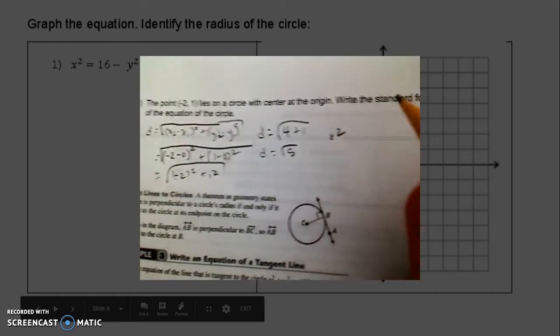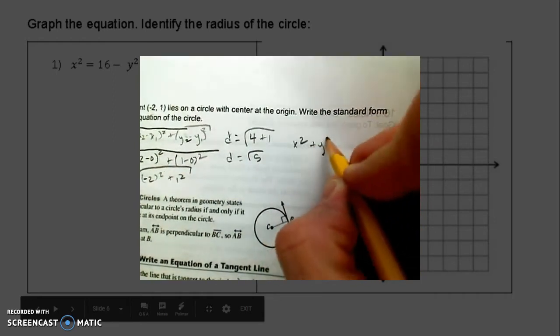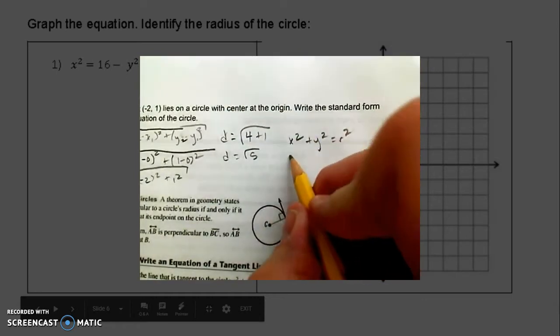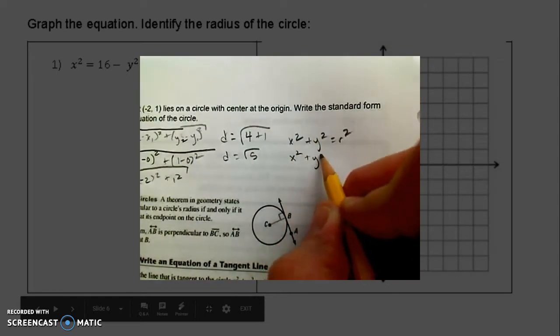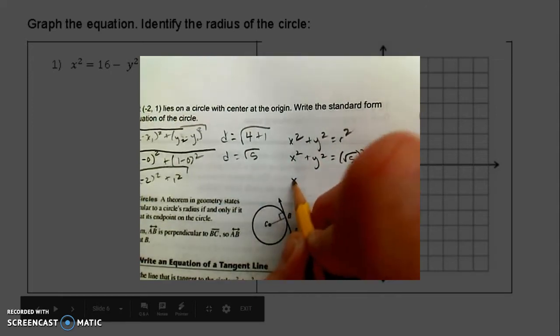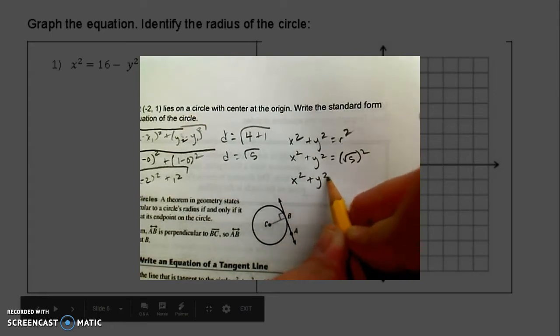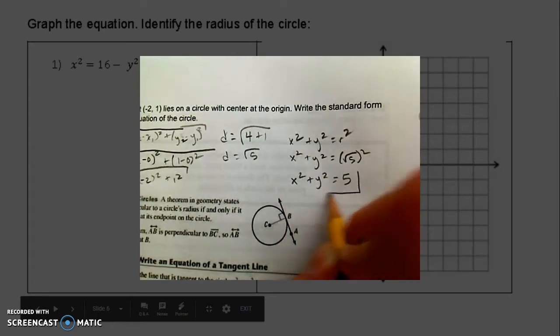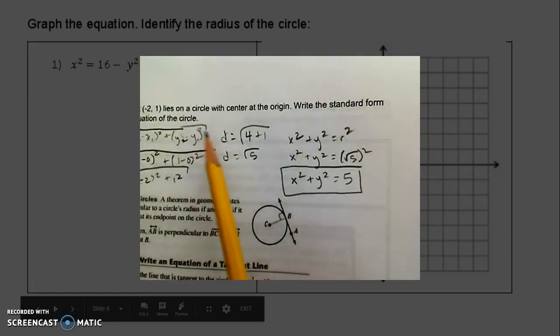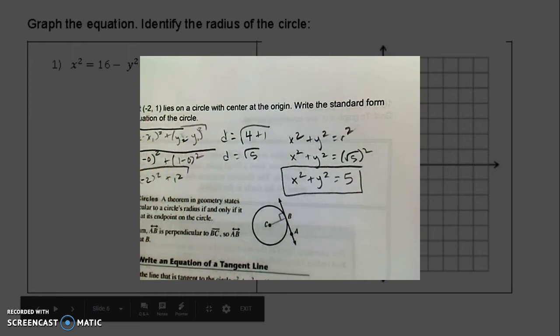So I have x² + y² = r². That's x² + y² = (√5)², which I'm going to write as 5. So x² + y² = 5. Our process here is we're finding the distance between the center and that point that's on the circle.